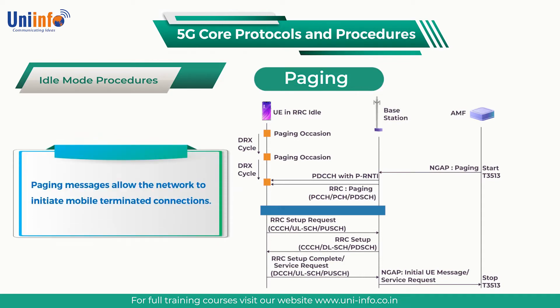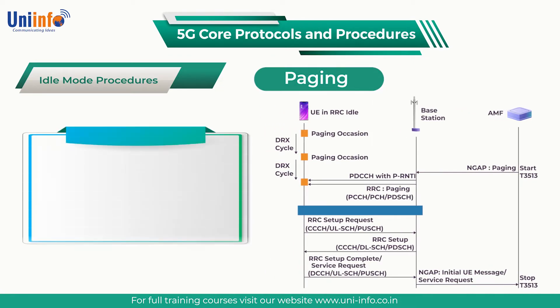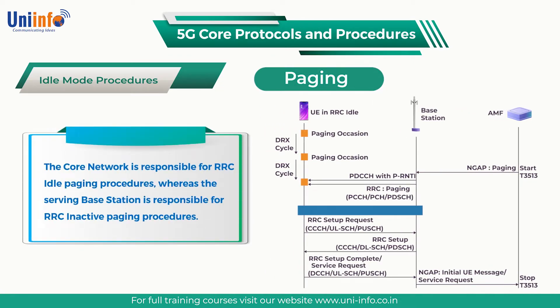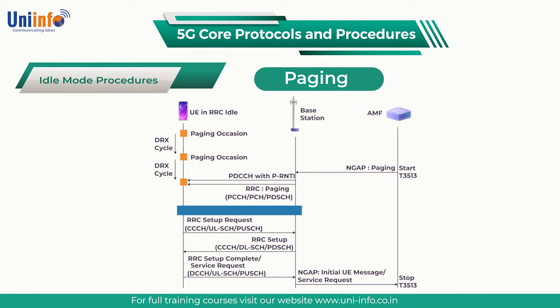Paging messages allow the network to initiate mobile terminated connections. The core network is responsible for RRC idle paging procedures, whereas the serving base station is responsible for RRC inactive paging procedures. An additional category for paging is applicable to UEs in RRC connected, RRC idle, and RRC inactive.